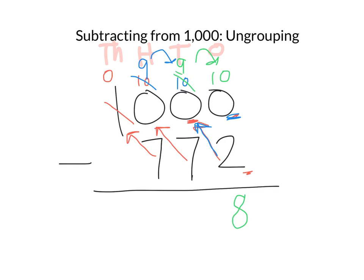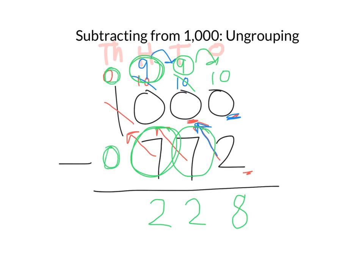We have 10 take away 2, which is 8. We have 9 take away 7, which is 2. We have 9 take away 7, which is 2. And we have 0 thousands take away 0, which is nothing. So our answer is 228. I know that can be a little fast, so we're going to do another one.